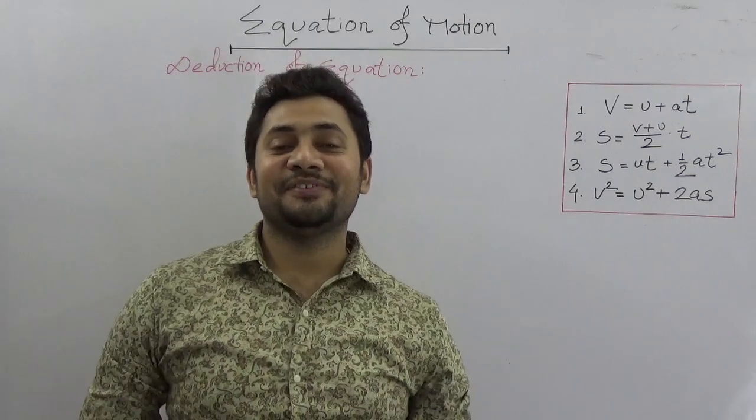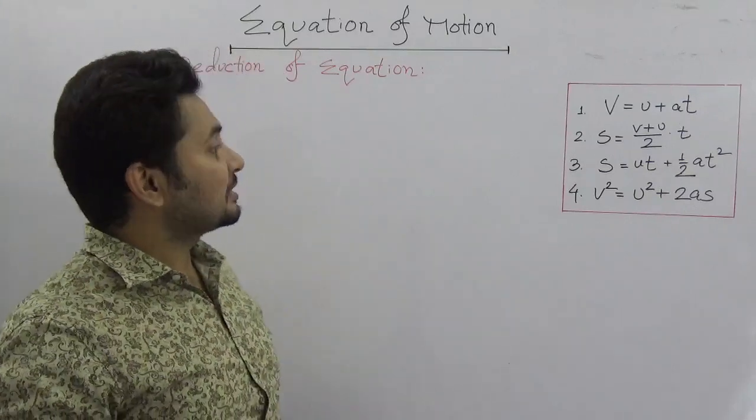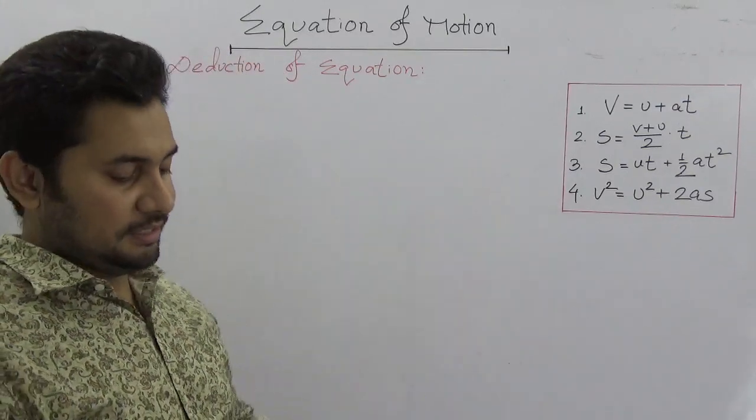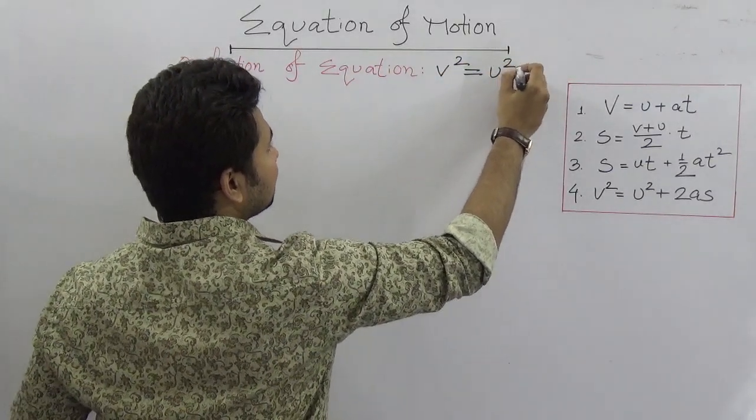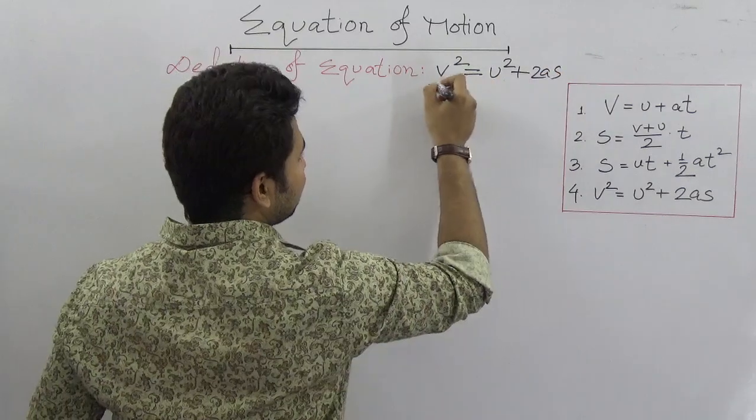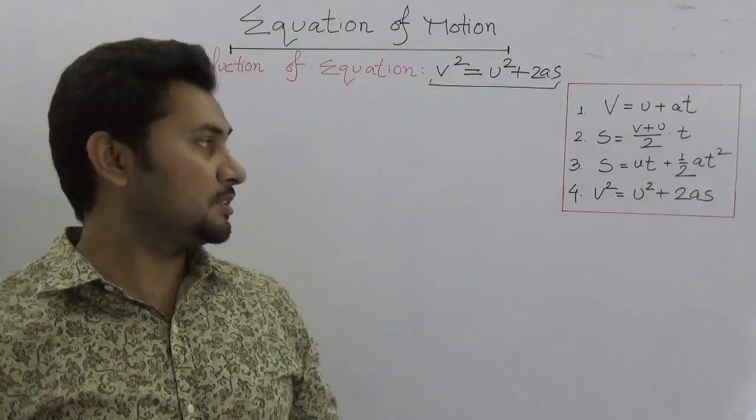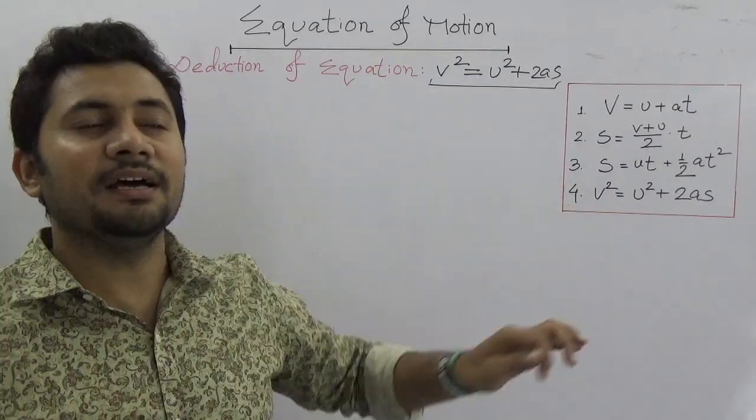Hello everyone, welcome to Fahad's tutorial, and this is Fahad again. In this lecture I will be explaining the deduction of the fourth equation, which is v² = u² + 2as. You already know these are very important equations known as the equations of motion, and we need to use them a lot in mathematical calculations.